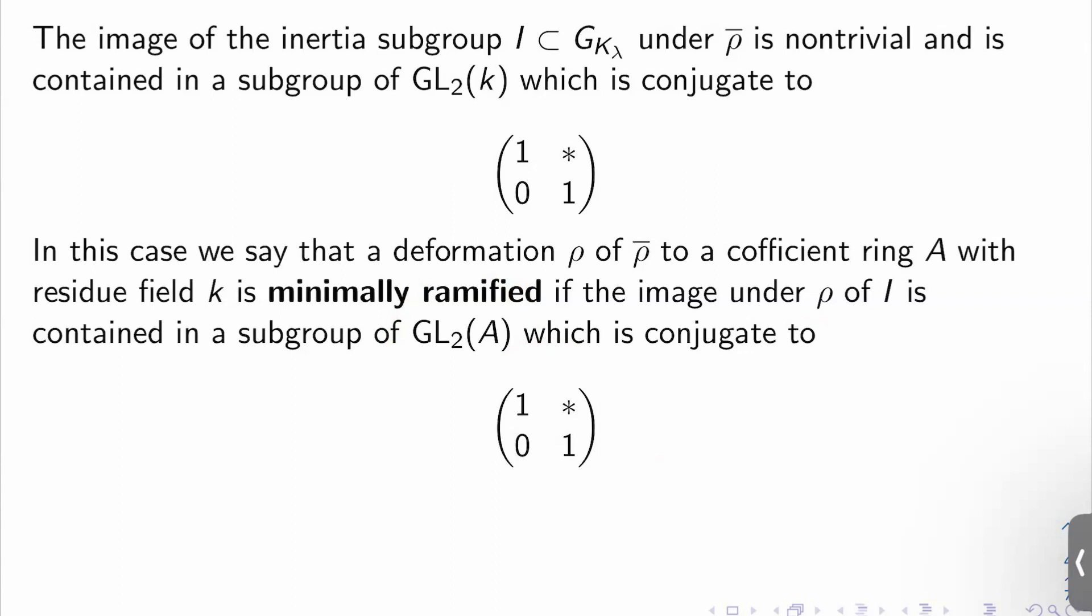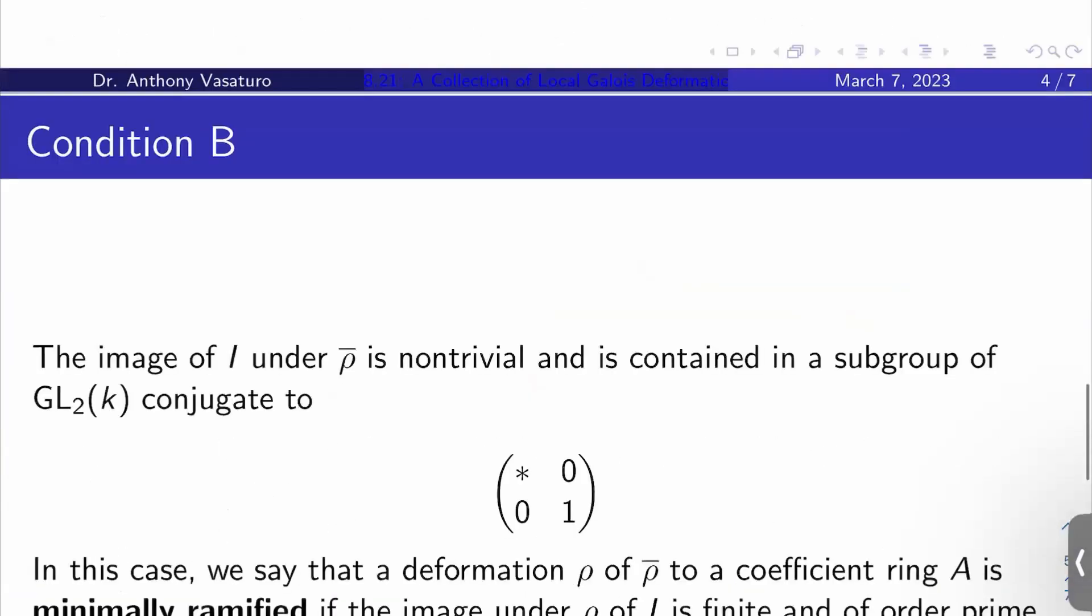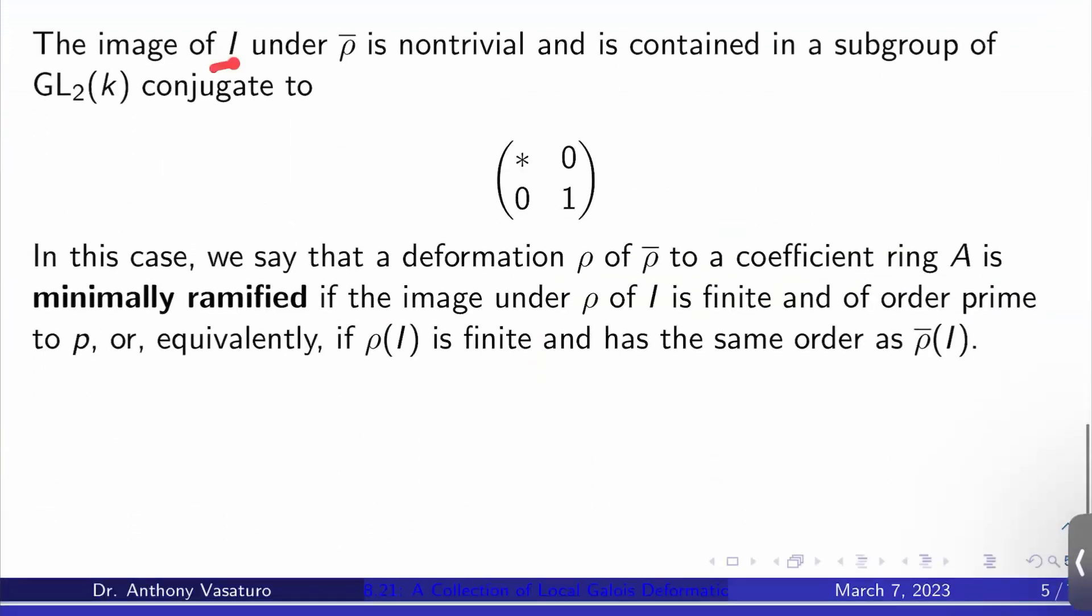But there's another way you can allow minimal ramification in some sense. We'll call that condition B. And that's that the image of I under rho bar is non-trivial and is contained in a subgroup of GL_2 of K conjugate now to star zero zero one. So again, if we had no ramification, this would be a one. Usually this will be some character like the cyclotomic character or something like that.